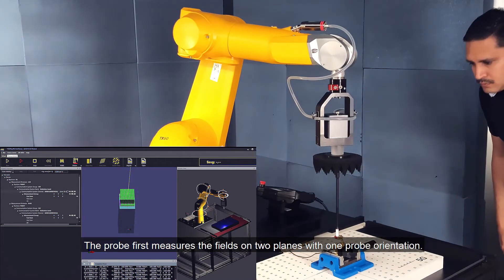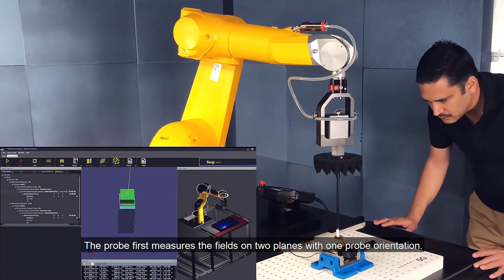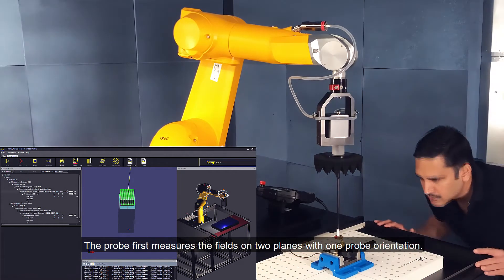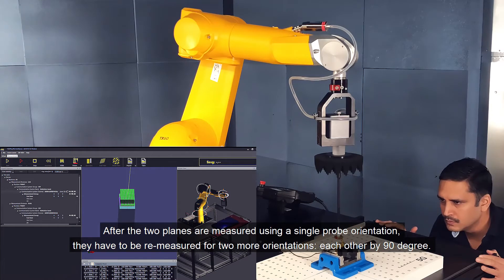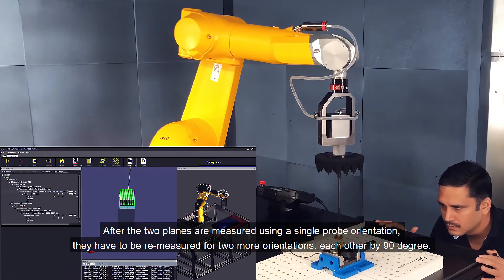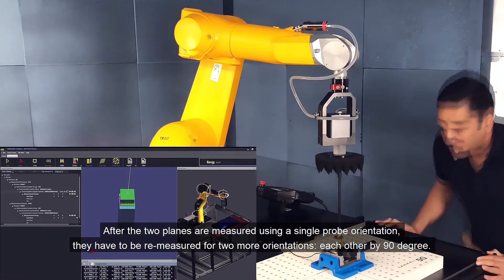The probe first measures the fields on two planes with one probe orientation. After the two planes are measured using a single probe orientation, they have to be re-measured for two more orientations.